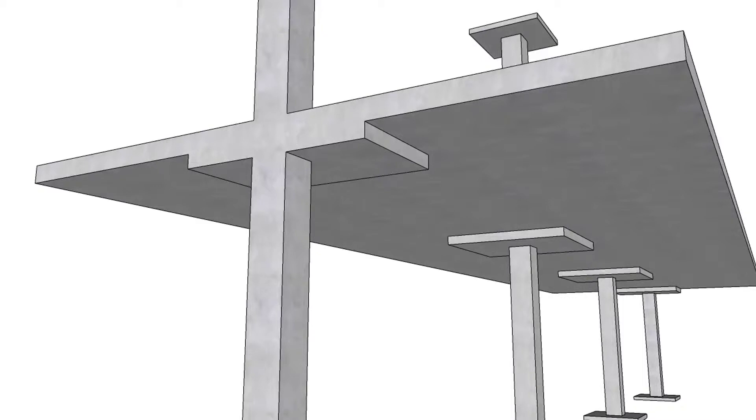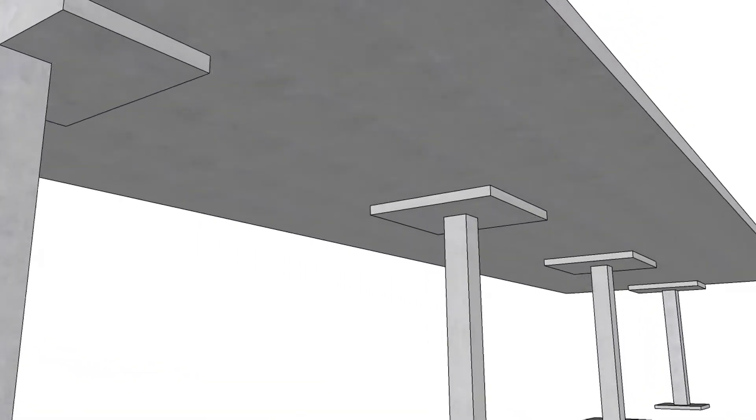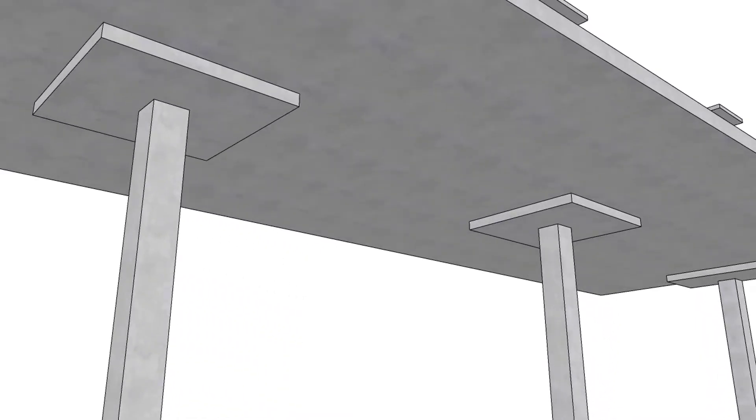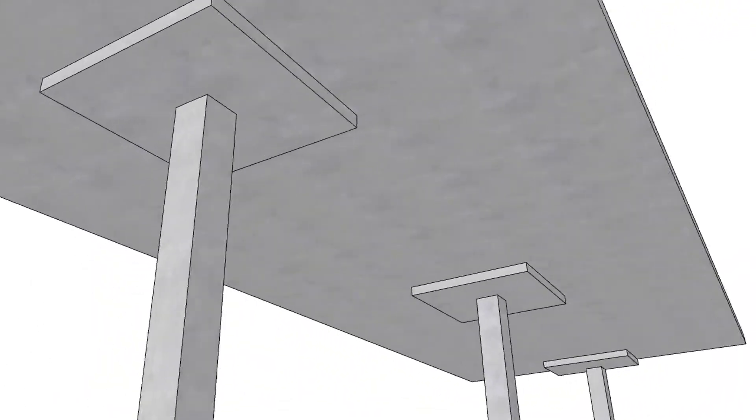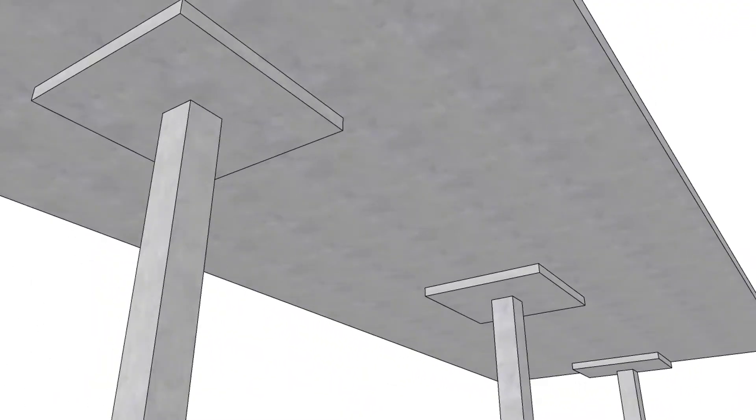The primary purpose of drop panels is to increase the two-way shear capacity at supports. The flat slab system has the advantage of relatively simple construction and formwork, low floor-to-floor heights, and a relatively flat ceiling which allows an architectural finish to be applied directly to the underside of the slab.